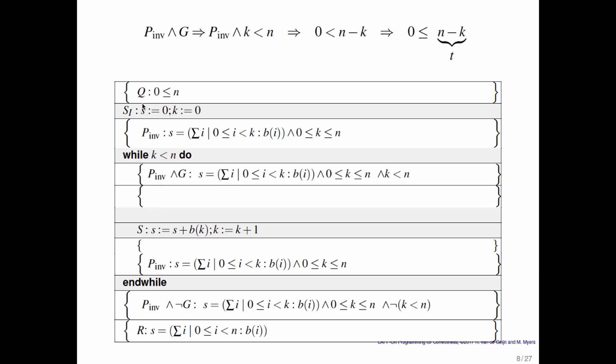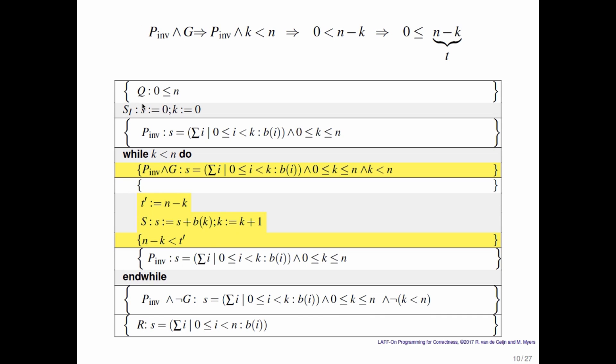And we can kind of look at this and say, it's going to decrease every time we go through the loop because k is going to increase every time we go through the loop. So this is a very good candidate. So what do we know? We know that zero must be less than or equal to n minus k at the top of the loop. What else do we know?